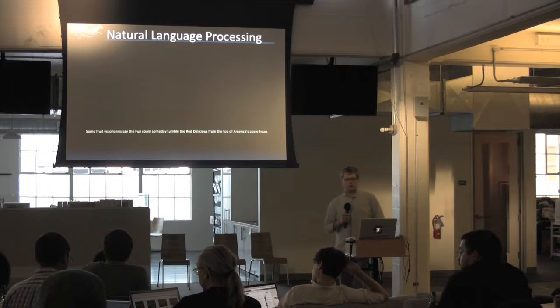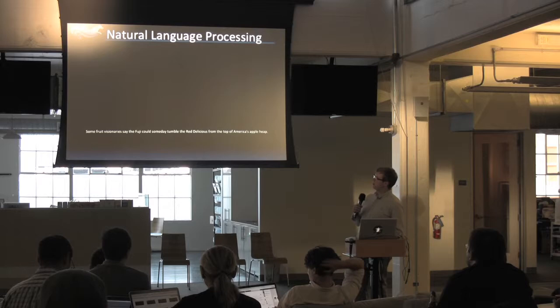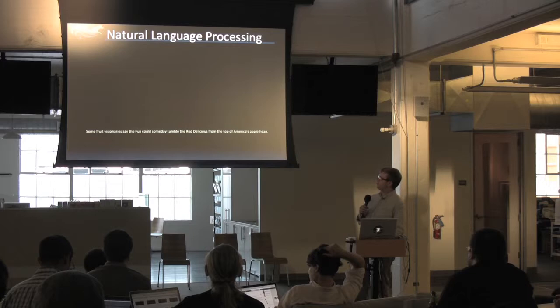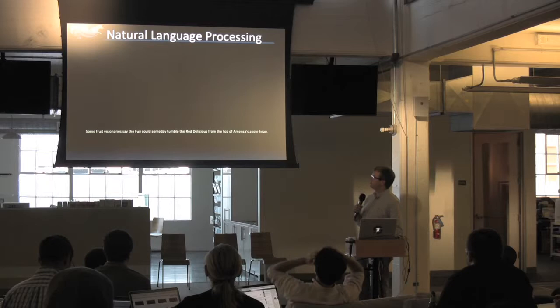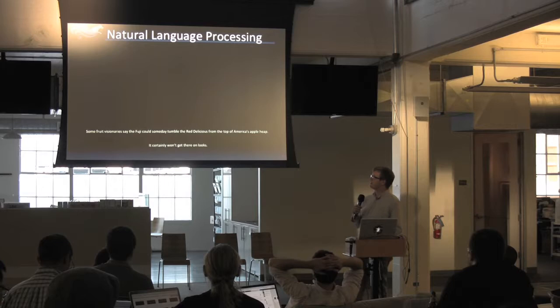Generally in natural language processing, particularly in monolingual NLP, we're interested in annotating sentences or documents. For example, you have a sentence like: 'Some fruit visionary say the Fuji could someday tumble the red delicious from the top of America's apple heap.' This is from the 1980s when the Wall Street Journal was writing about Japanese apple imports.